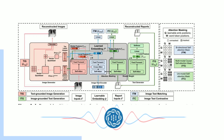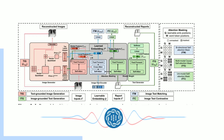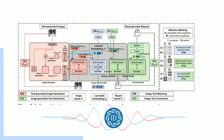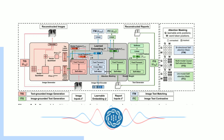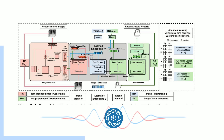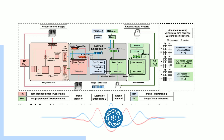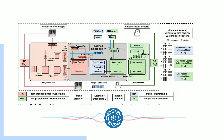Then there's image-text matching, which is a bit more like detective work. The AI has to figure out if an image and a report actually belong together. So it's not just blindly matching — it's learning to analyze and critically assess whether the image and report are a true match, which is really important for real-world accuracy.